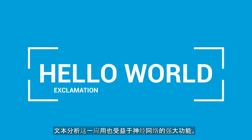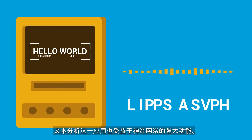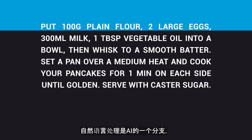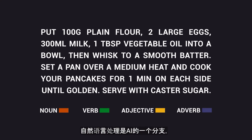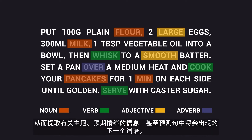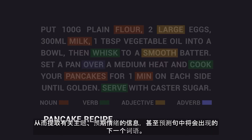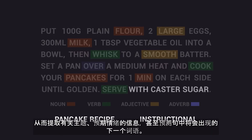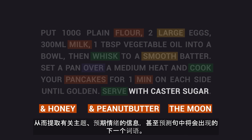Text analysis is another application that benefits from the power of neural networks. Natural language processing is a subfield of AI which uses linguistics to give computers the ability to process text and spoken words, allowing extraction of information about the topic, the intended sentiment, or even predict what would be the next word in a sentence.